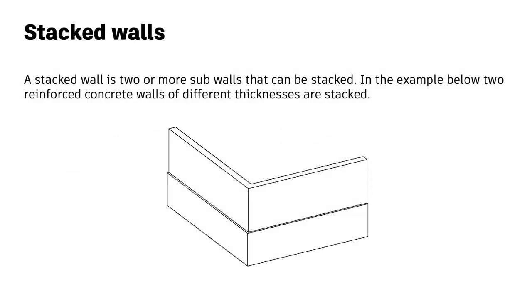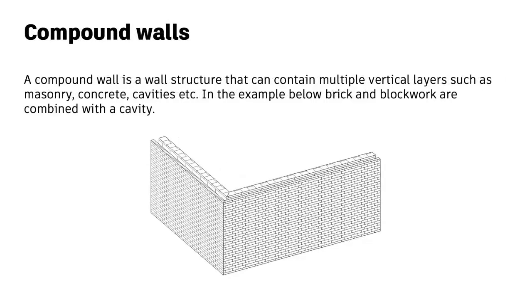A stacked wall is two or more sub-walls that can be stacked together — for example, two reinforced concrete walls stacked with different thicknesses. Stacked walls are very convenient as you can place them in one simple command. A compound wall is a wall structure that can contain multiple vertical layers such as masonry, concrete, and cavities.